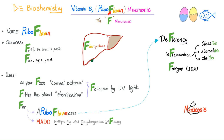Other uses for riboflavin: you can give it to patients who suffer from MADD — multiple acyl-CoA dehydrogenase deficiency. Please watch my previous video. It has to do with beta oxidation.